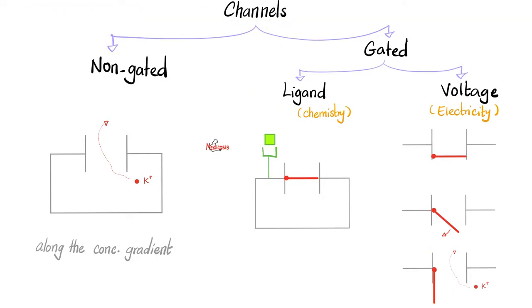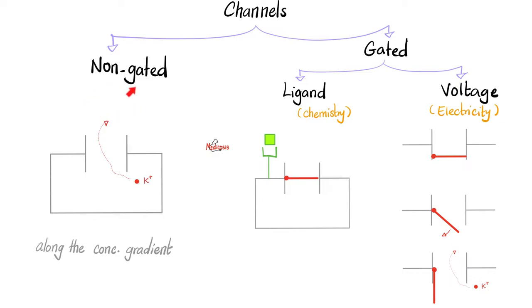First, the channels. Some of your channels have no gates — we call these non-gated or leaky channels. For example, the non-gated leaky potassium channel. Why is the potassium moving from the inside to the outside? Because there is more potassium inside than outside, i.e., along the concentration gradient, from high concentration of potassium inside the cell to the lower concentration of potassium outside the cell.